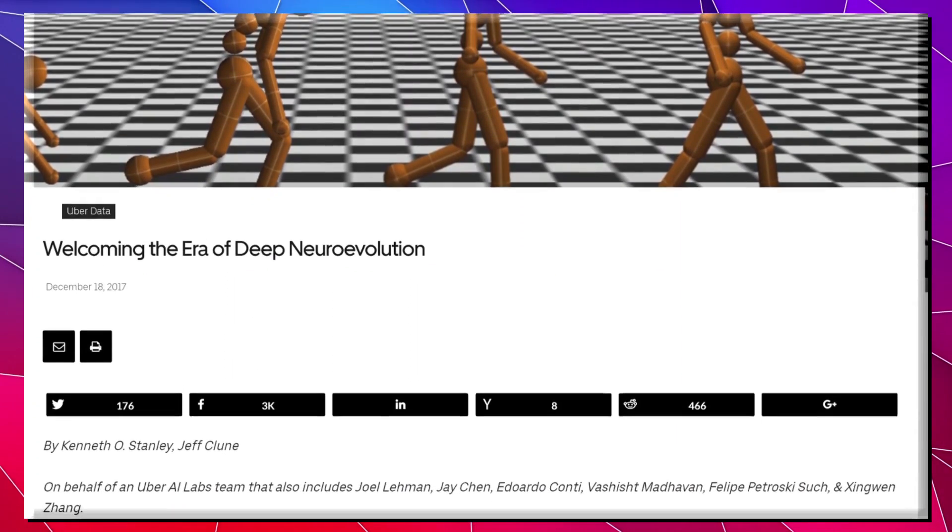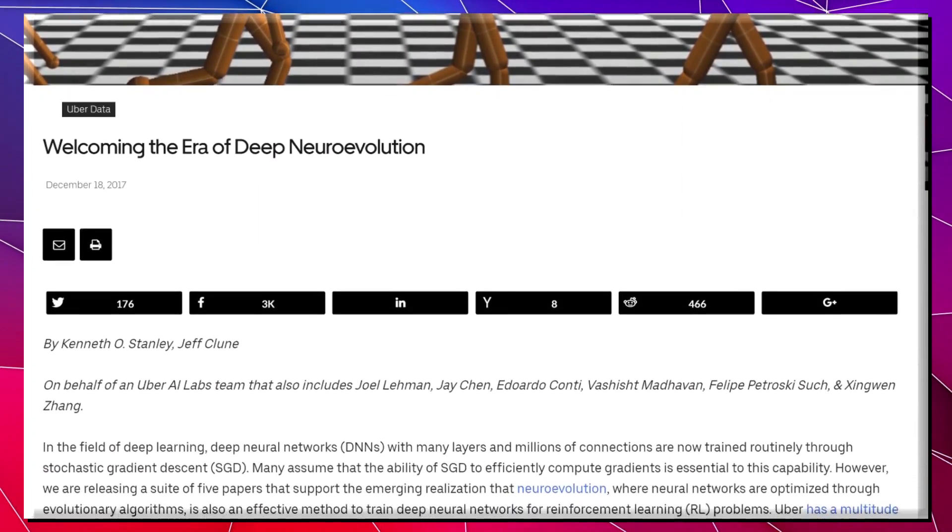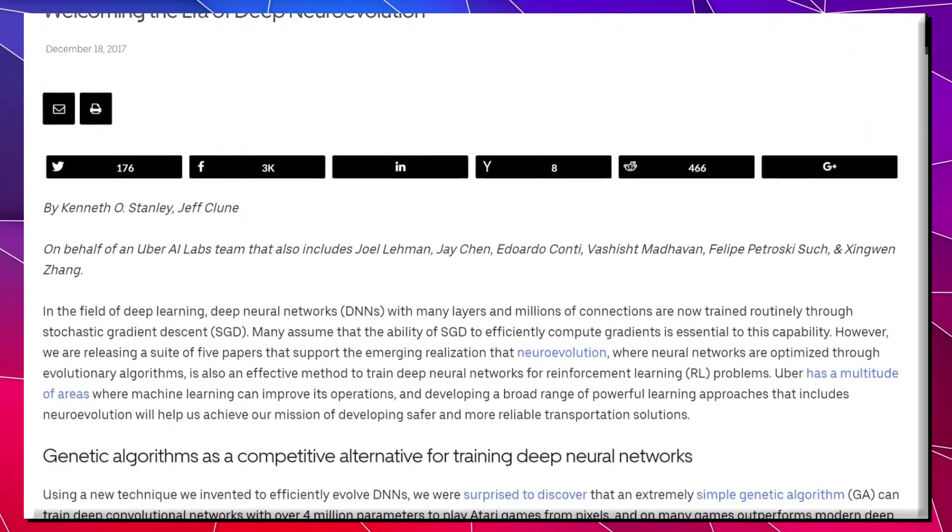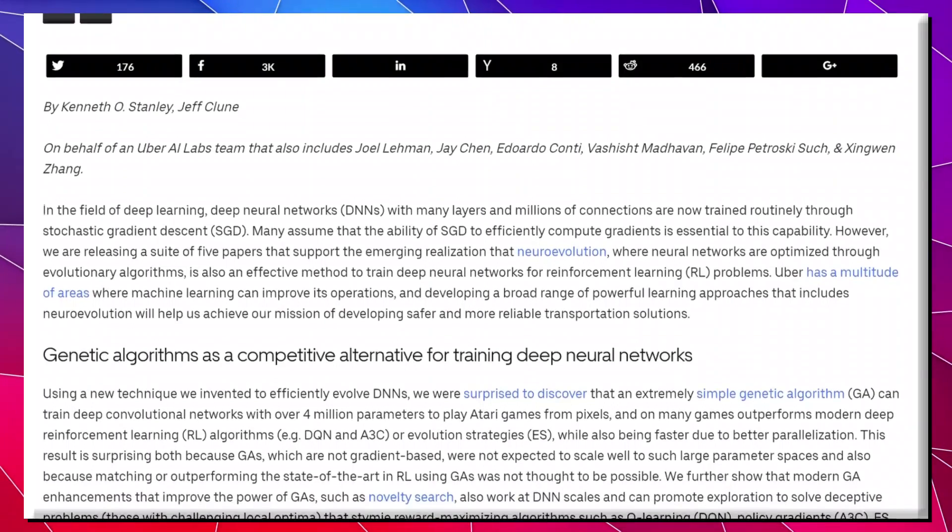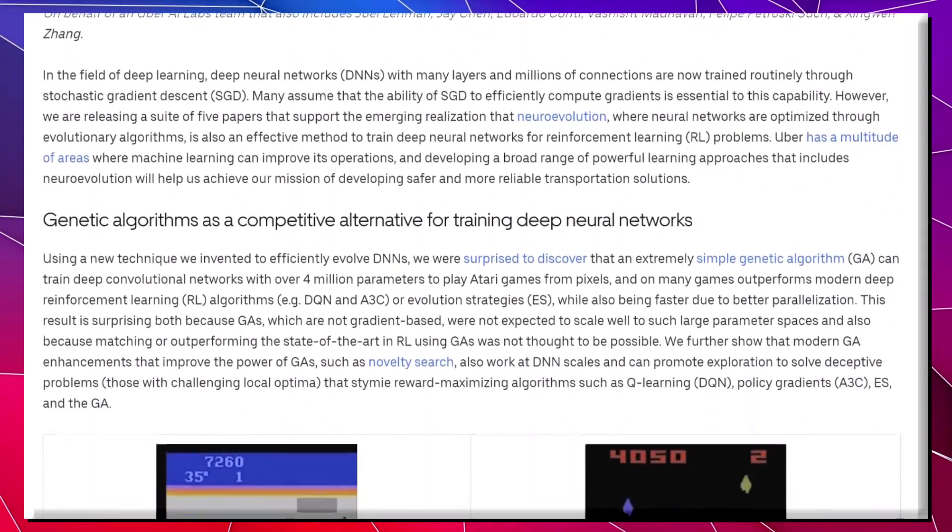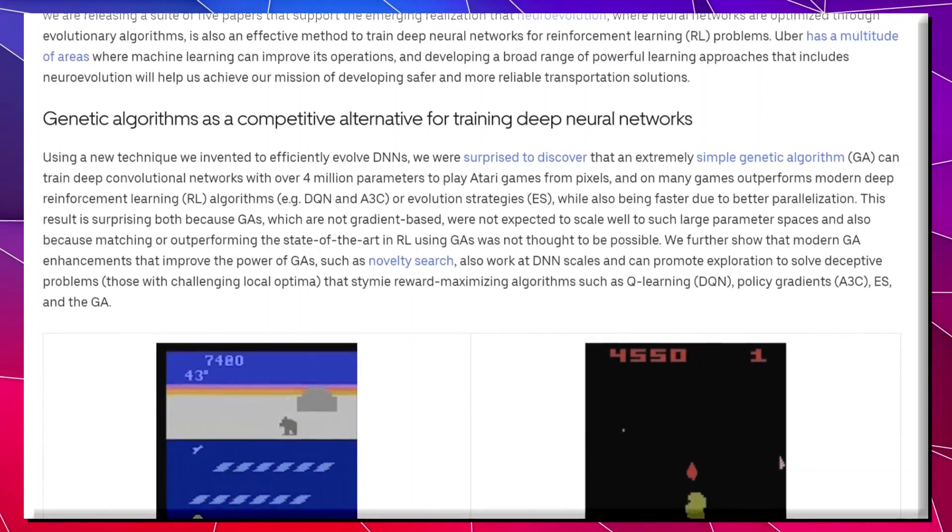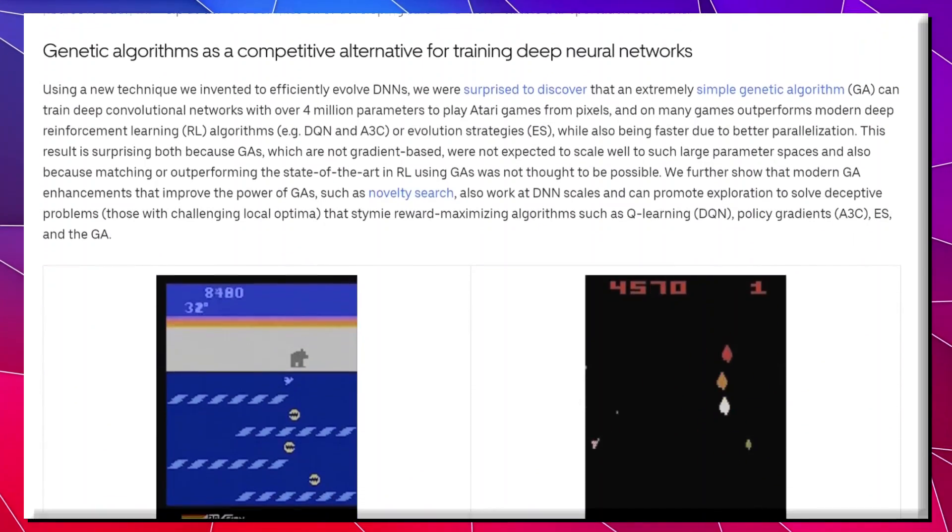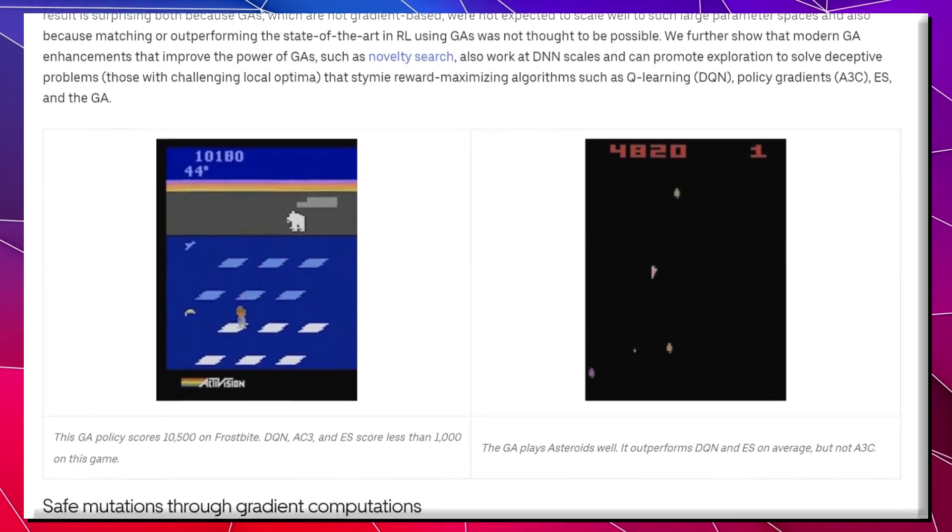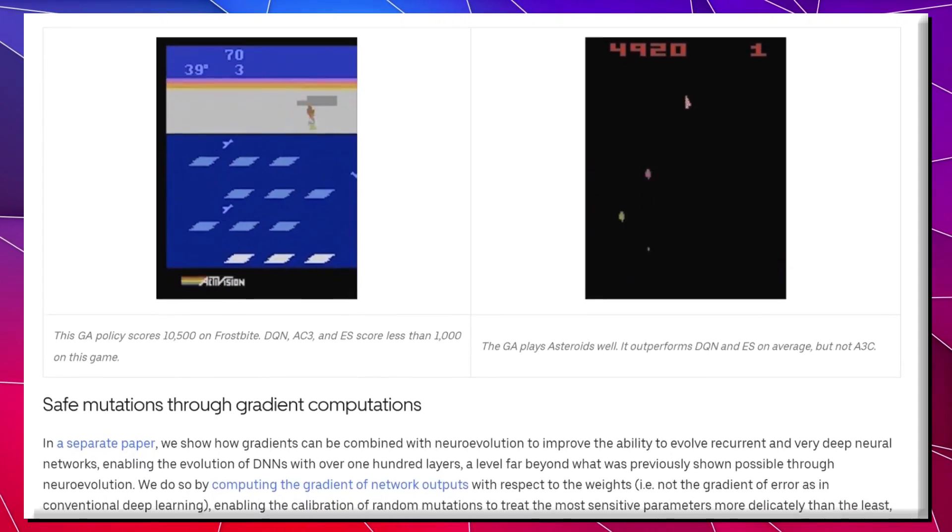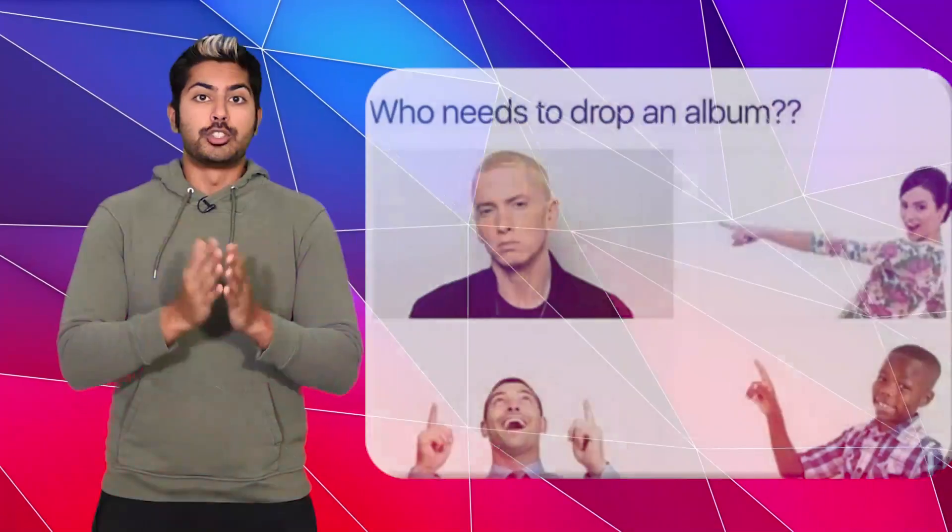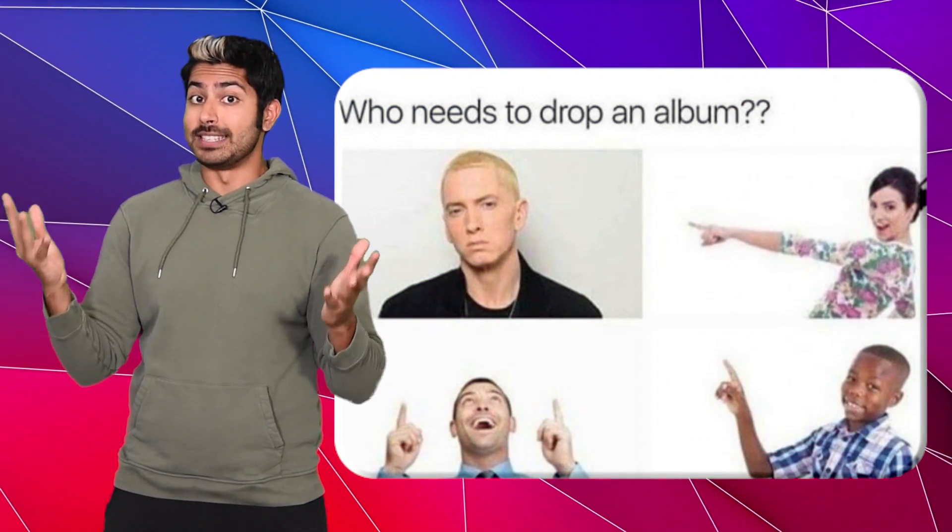And it wasn't just Google. Neuro-evolutionary strategies have started to see more adoption as popular tech companies, like Uber, have started adopting them to help improve the performance of their products. Uber's dispatch algorithm has to analyze thousands of features in real-time to generate more than 30 million rider-driver match-pair predictions per minute. And neuro-evolution helps them speed up this crucial process.